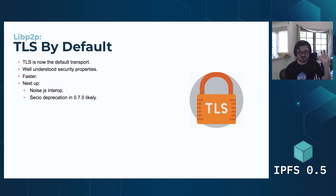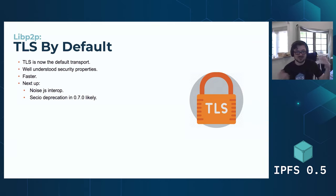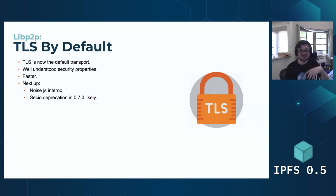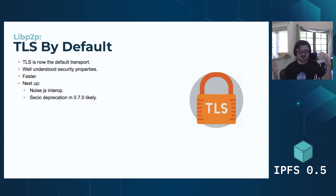We're also introducing another secure transport called Noise, which offers a bit of a drop-in for JavaScript and other languages. Noise is a lot simpler to implement than TLS, though it's not quite as well understood as TLS, which is the protocol that secures the entire web. We will be deprecating our current security transport SecIO in the future, so that we can use these well-tested and well-understood security transports.